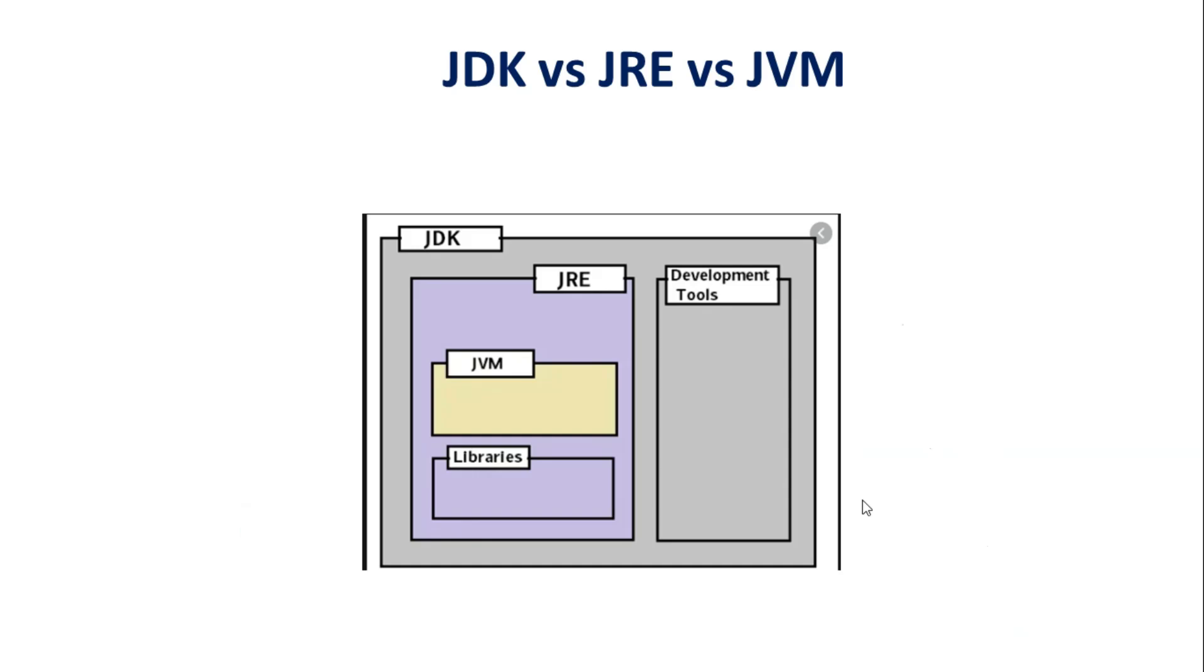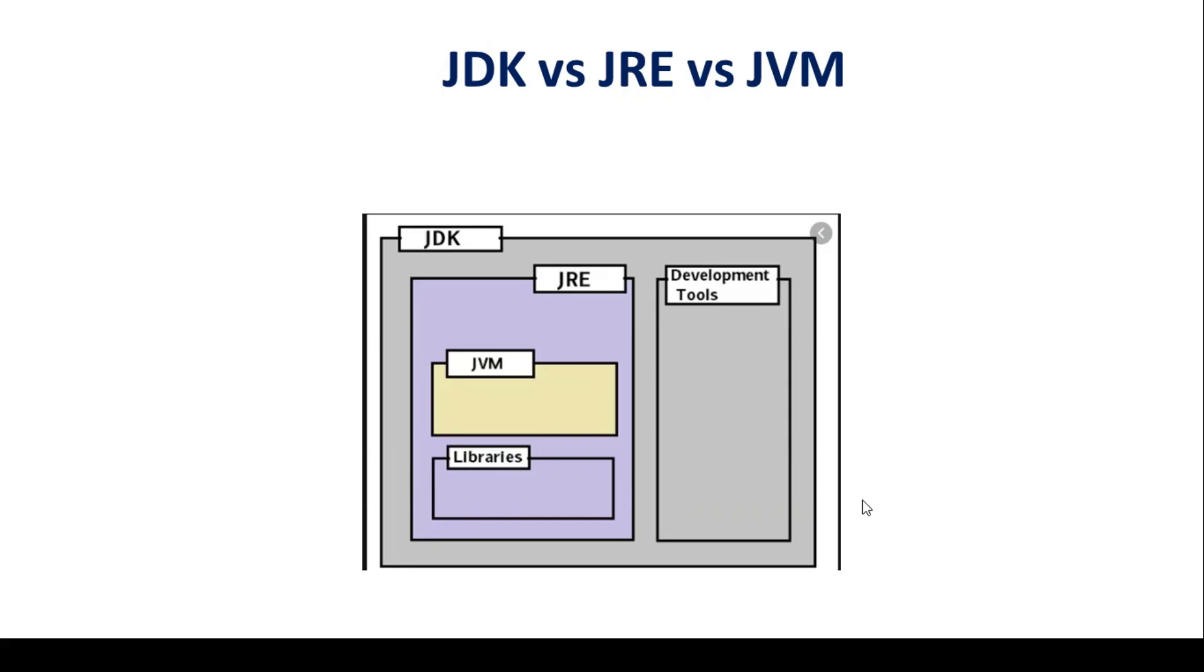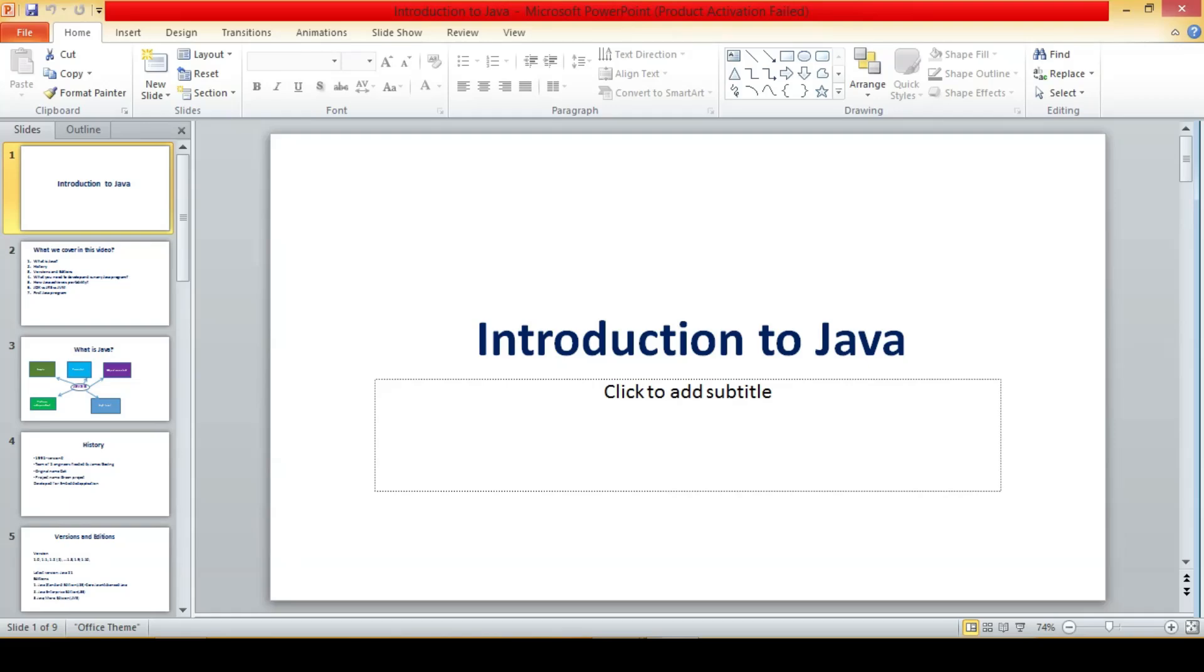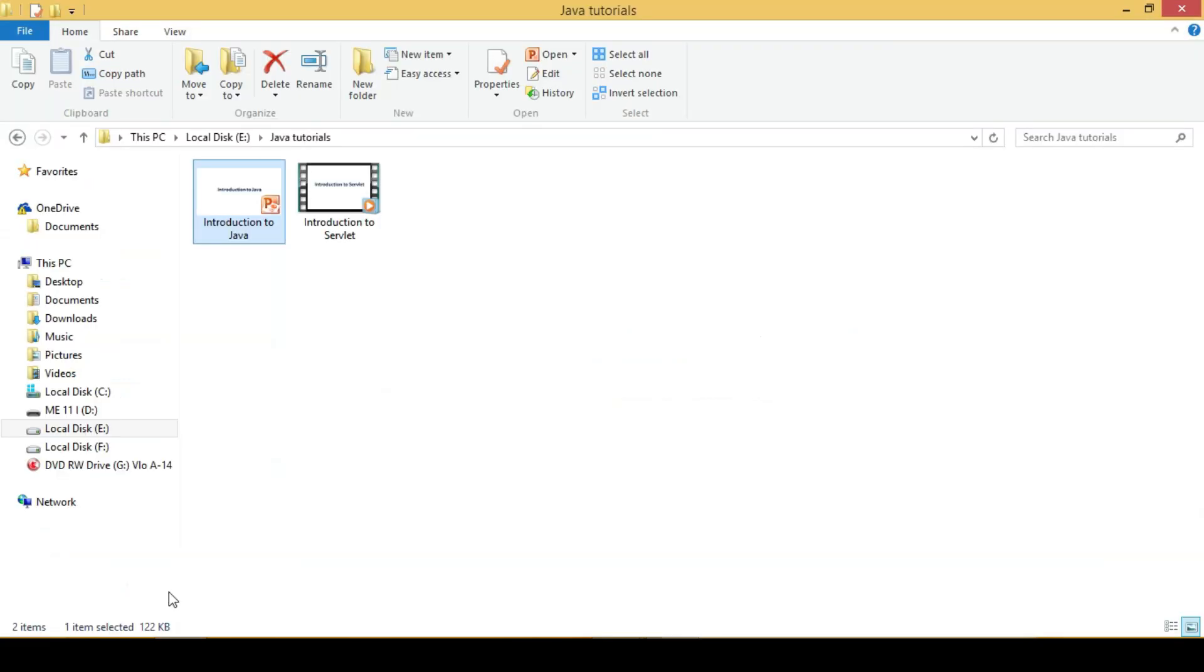Let us also understand JDK, JRE, and JVM. JDK is Java Development Kit. It contains JRE and development tools. JRE in turn contains JVM and libraries. JVM is Java Virtual Machine. Now let us see a code, source code.